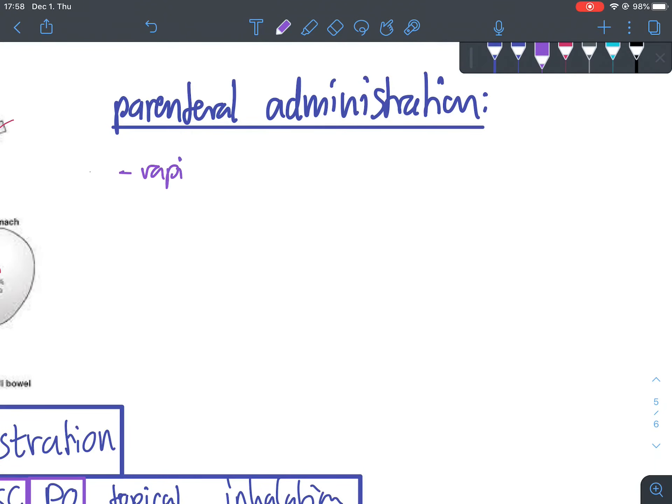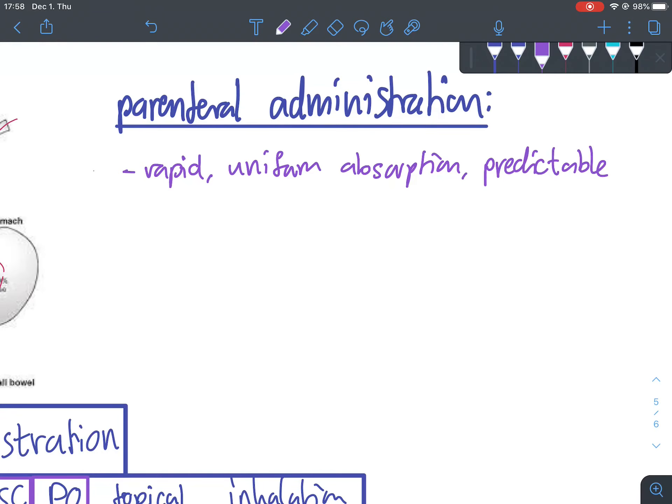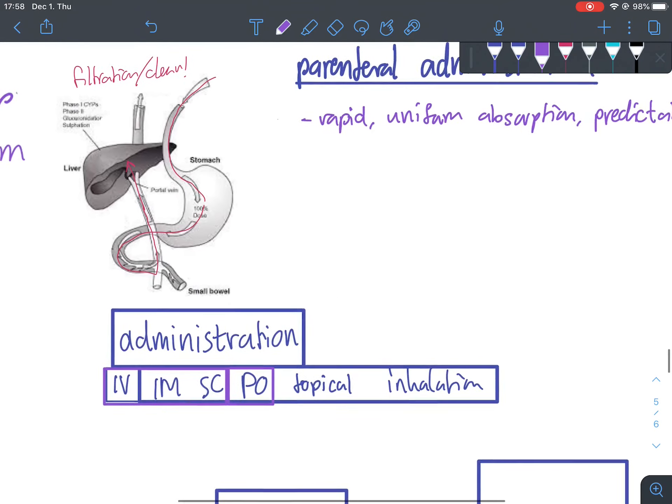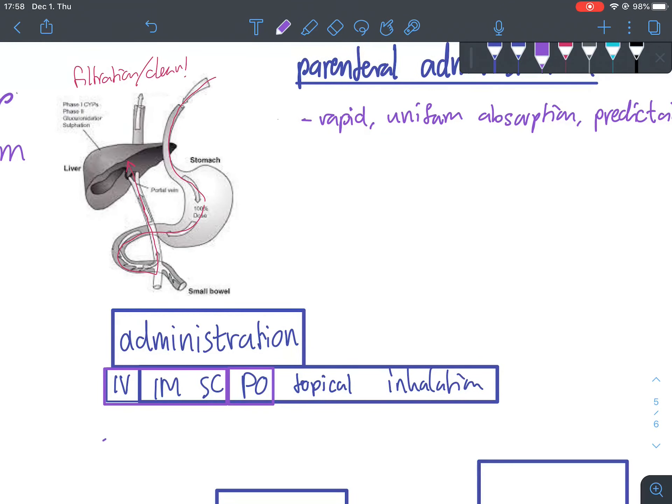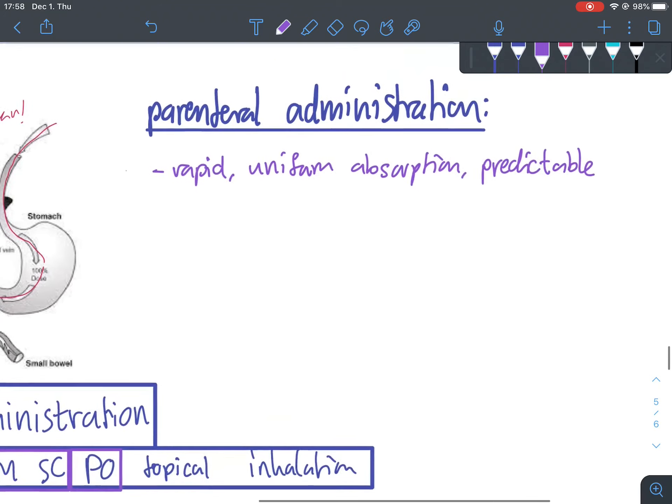And let's discuss that one a little bit. This is great because it's rapid onset, more uniform absorption, and much more predictable. And if we're talking about speed, then obviously intravenous is going to be the fastest, followed by intramuscular, followed by subcutaneous. So IV will have an almost immediate effect.